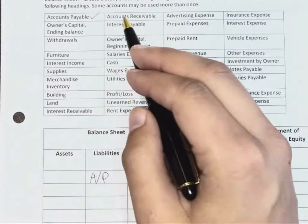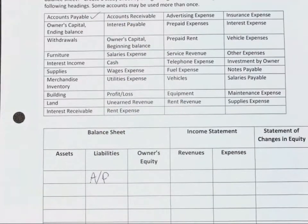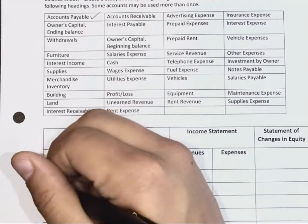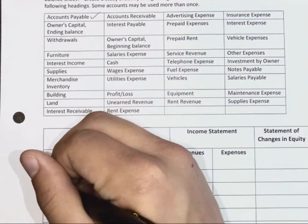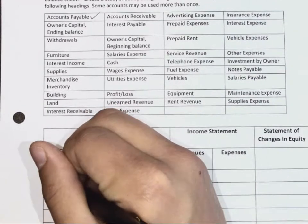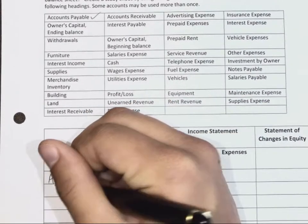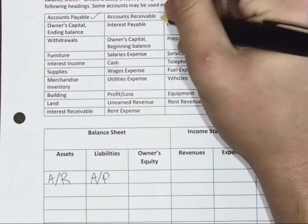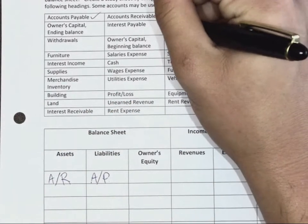If a liability is when you owe and accounts payable is when you get a bill outstanding, what would accounts receivable be? It is when you do some work for someone, you hand them a bill, and they haven't paid you yet — so it's an asset.